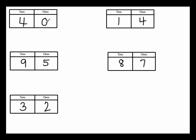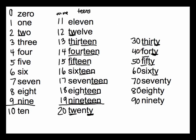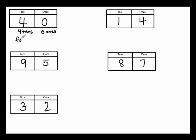So we see numbers in place value charts. This tells us we have four tens and zero ones. What's the word for four tens? We go back to our list and the number word for four tens is forty. Remember, T-Y tells you that you have this many number of tens. If you have zero of anything, you're not going to write down that word, so all we have is forty. That's the number word for this number.